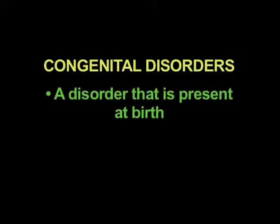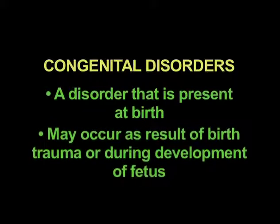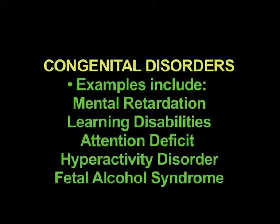A congenital disorder is a disorder that's present at birth. It may occur as the result of a brain trauma or during the development of the fetus. Some examples of this are mental retardation, learning disabilities, attention deficit disorder, and fetal alcohol syndrome — all types of disorders that are either present at birth or occur during fetal development.